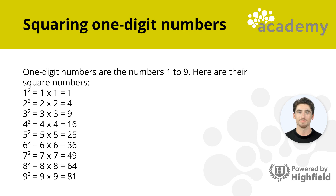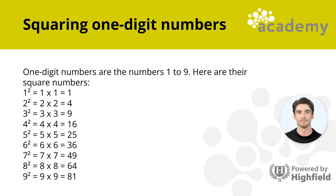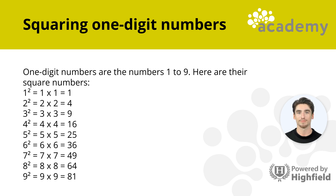One-digit numbers are the numbers 1 to 9. You need to be able to recall their squares. 1 squared equals 1. 2 squared equals 4. 3 squared equals 9. 4 squared equals 16. 5 squared equals 25. 6 squared equals 36. 7 squared equals 49. 8 squared equals 64. 9 squared equals 81.